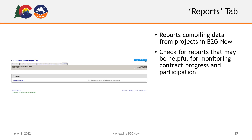Lastly, we have your Reports tab, which is where you can find any and all reports compiled with data from your projects or contracts in B2GNOW. Always be sure to check if B2GNOW may have a report that may be helpful for managing contract progress and participation.